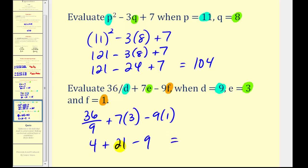So we have 4 plus 21, that's 25 minus 9, equals 16. And that's going to do it for this video. I hope you found this helpful.